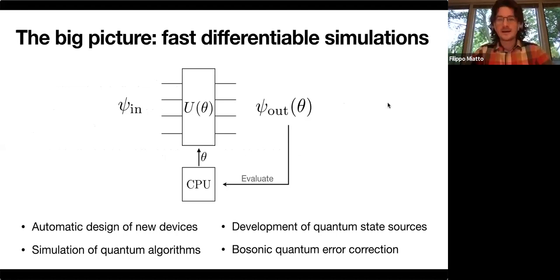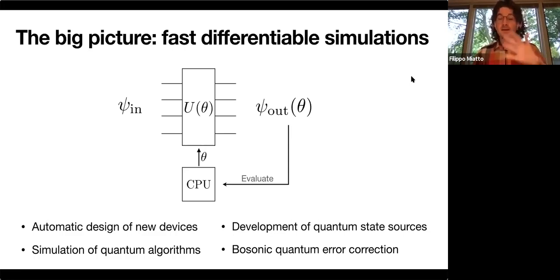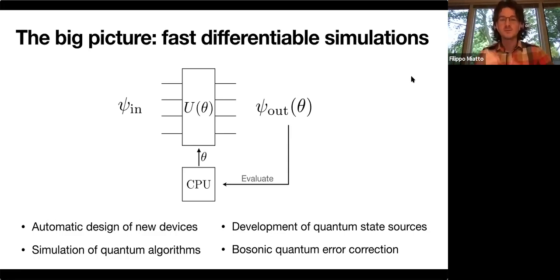The big picture is to have a fast differentiable simulator. We have some input quantum states, a parameterized circuit — here I just wrote theta, but we can have many parameters — and then some output that depends on those parameters. We evaluate the output, and depending on how satisfied we are, we run the same simulation with a different set of parameters. There is a loop going back and forth between simulating the gates that make the circuit and estimating and evaluating new parameters.